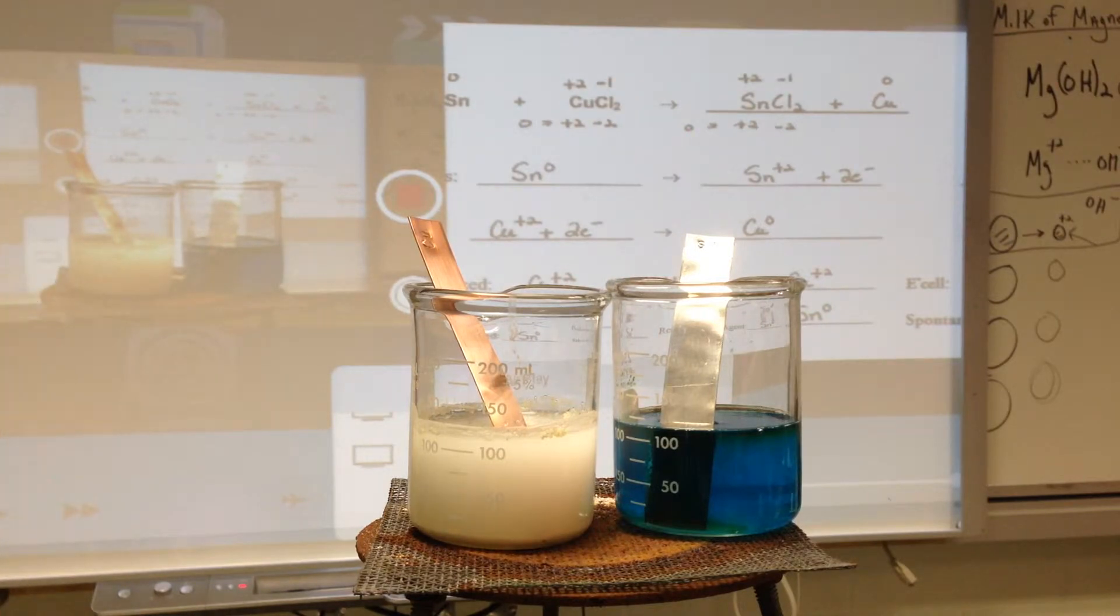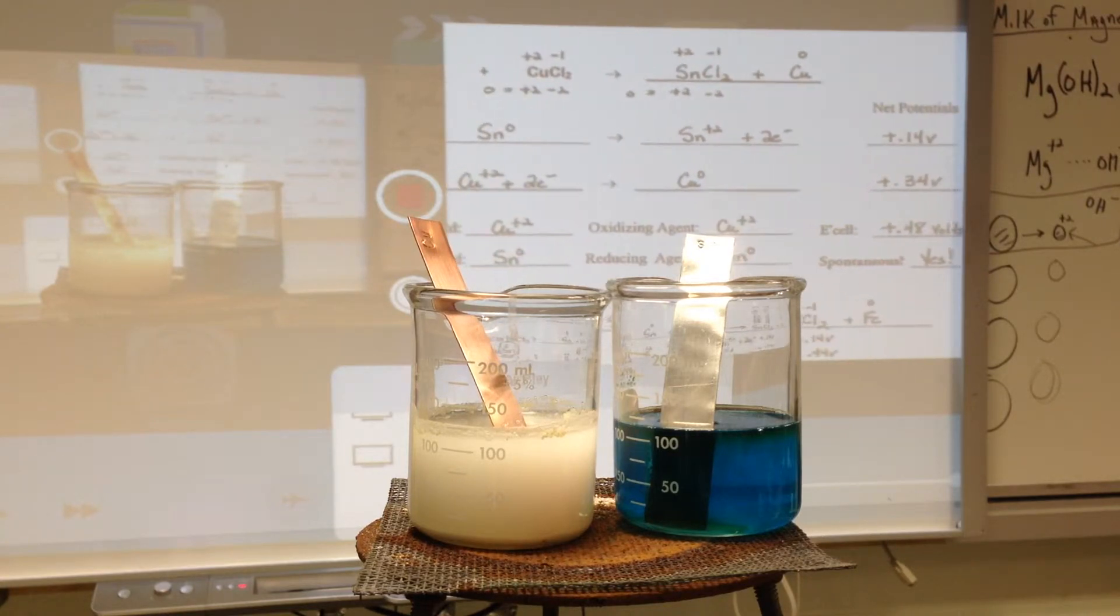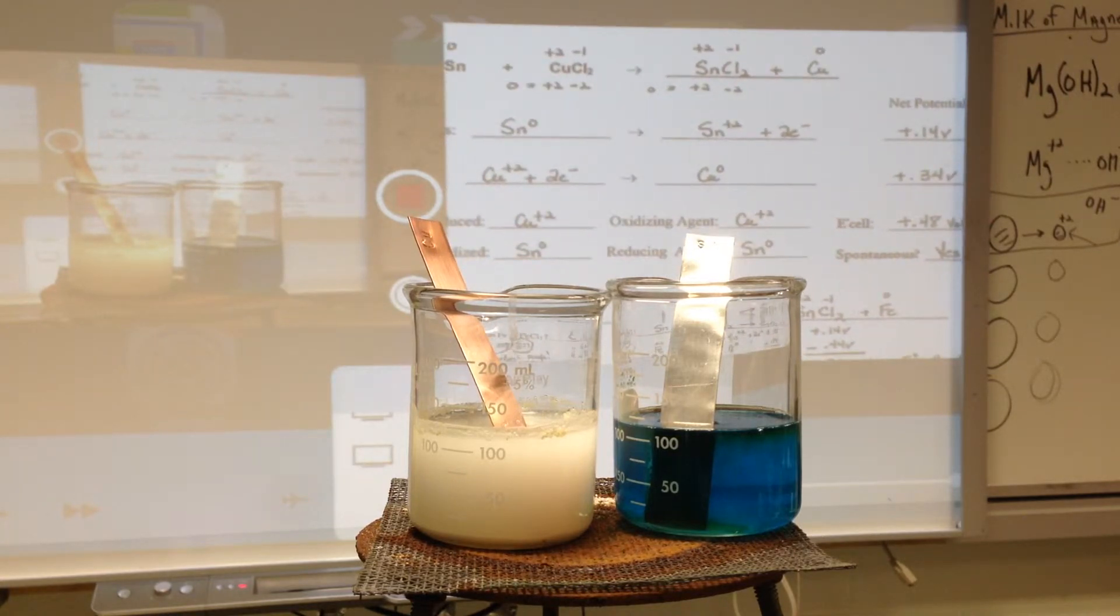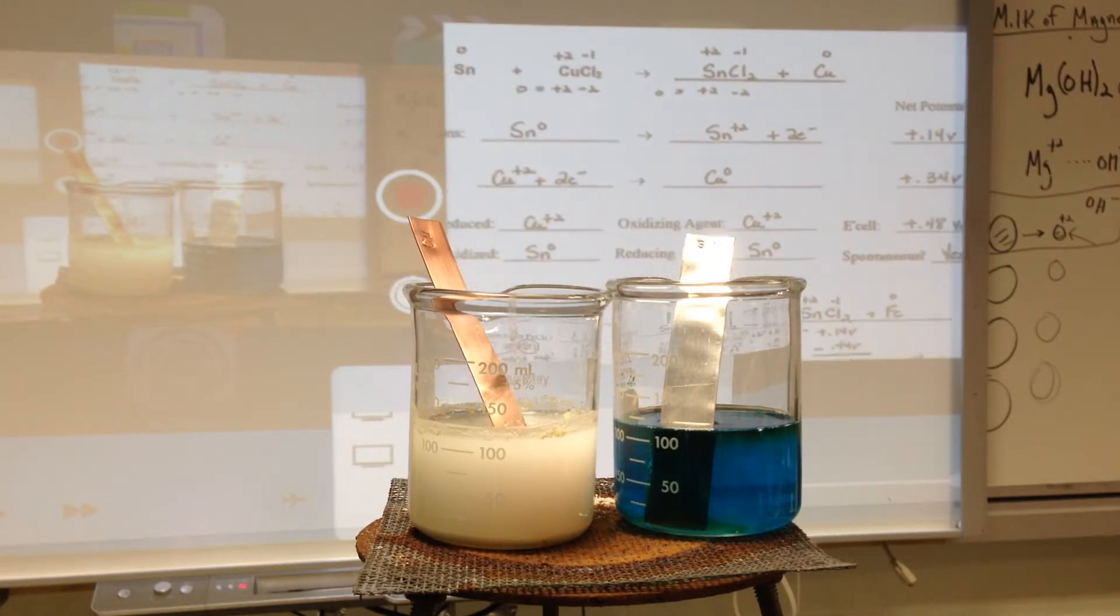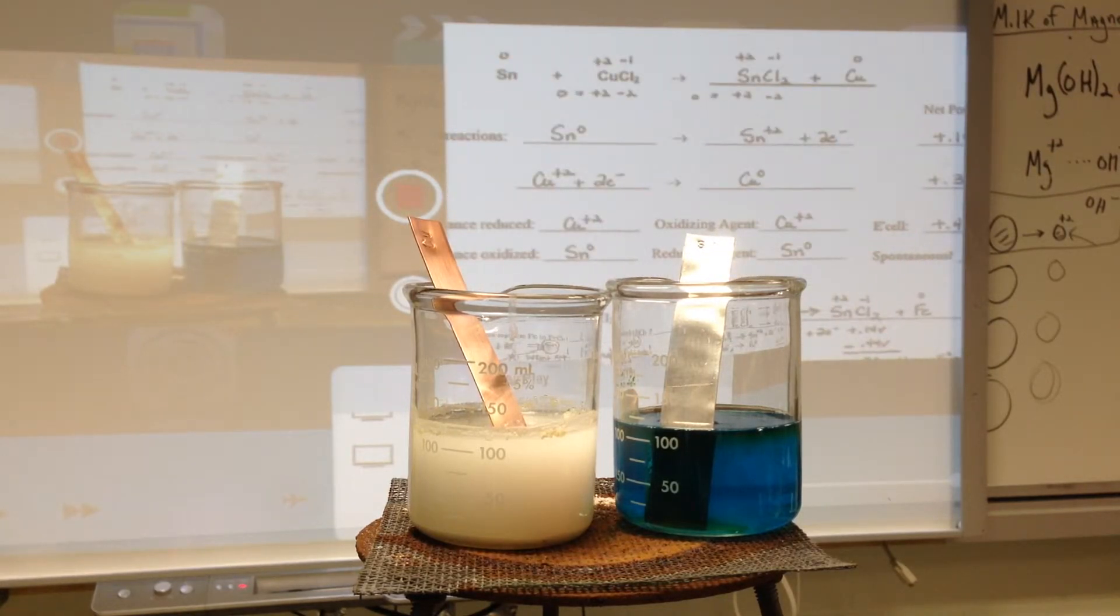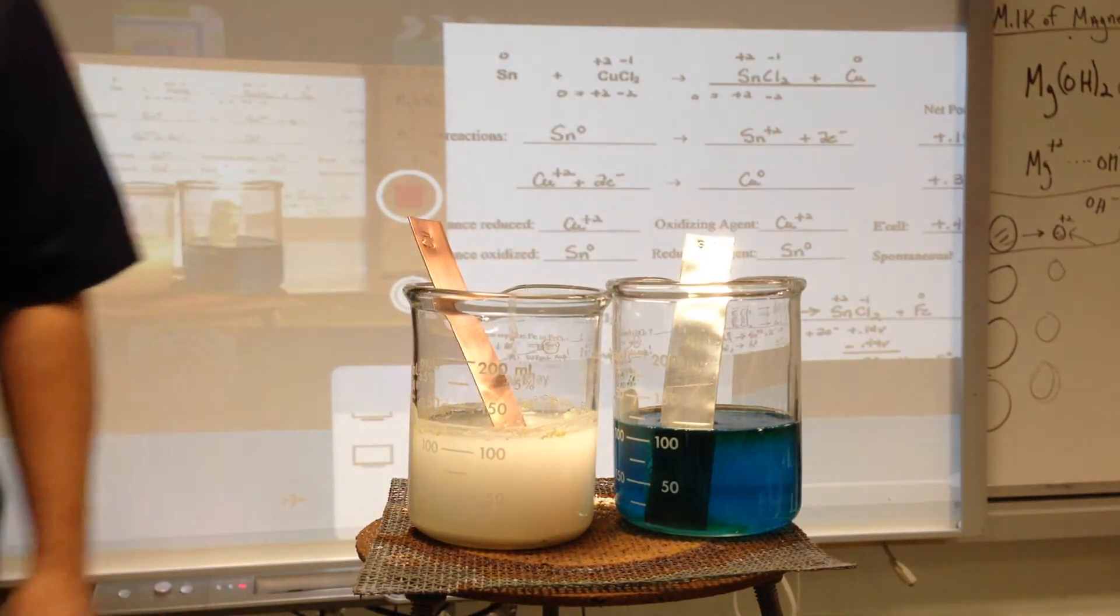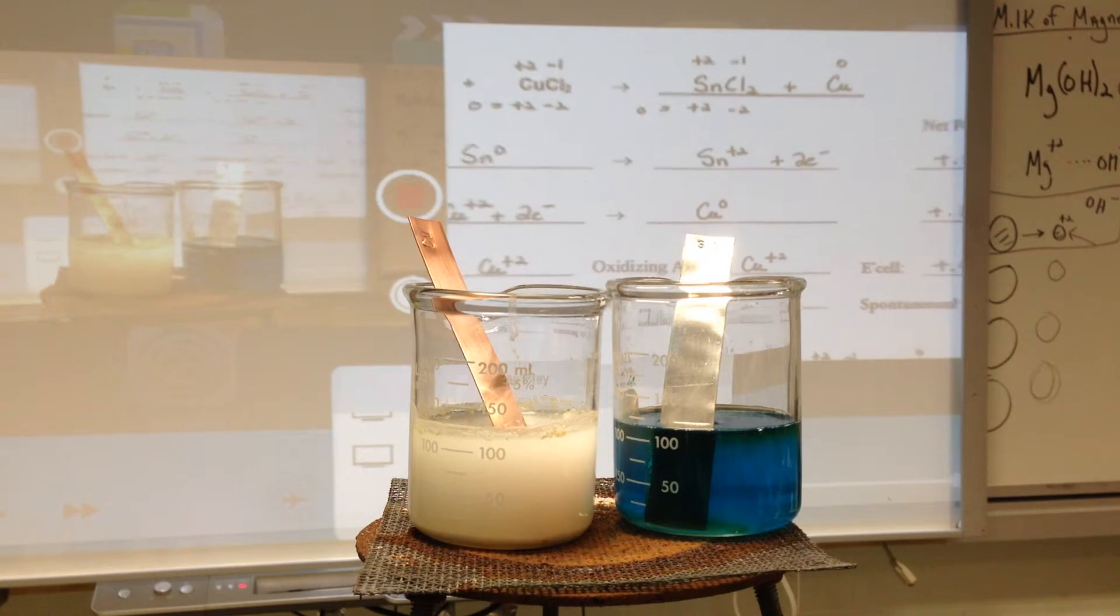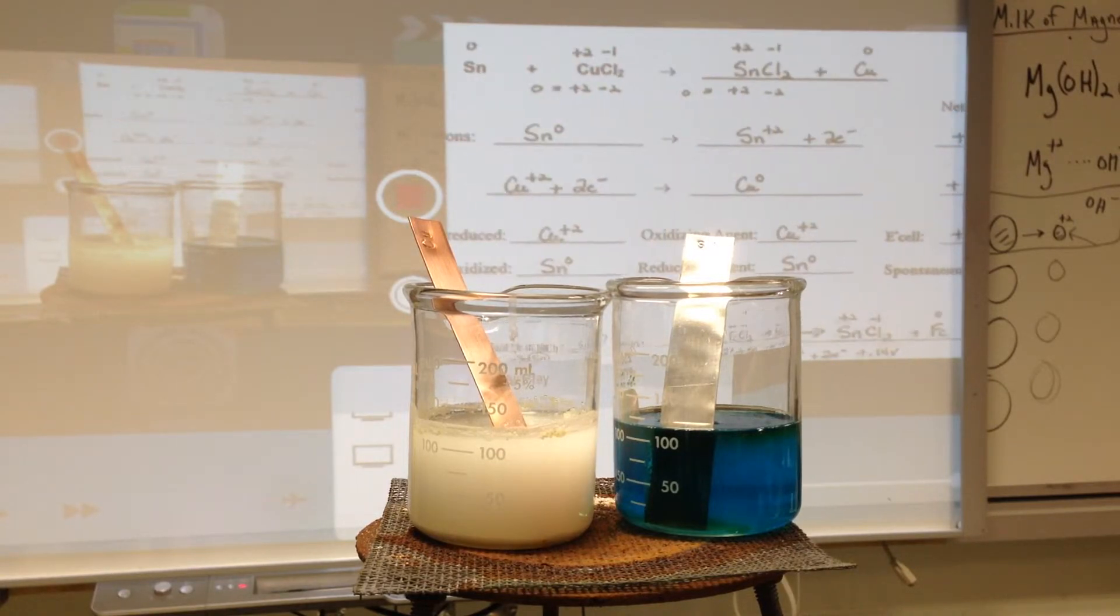If you look at its net potentials and go to your reduction potential chart, you'll see that the oxidation of tin has a positive net potential, an oxidation potential by switching the value from the reduction potential. The copper plus two, as written, because it's getting reduced, is positive.